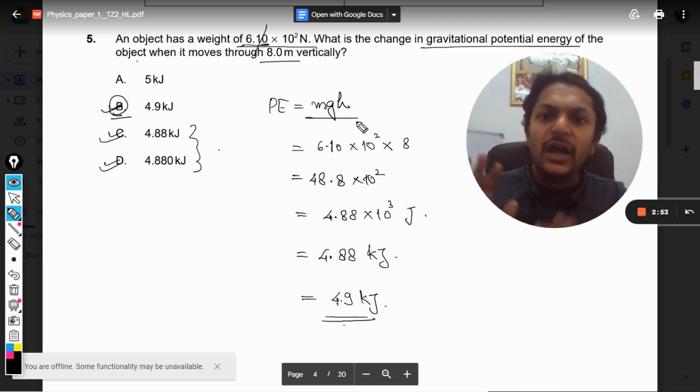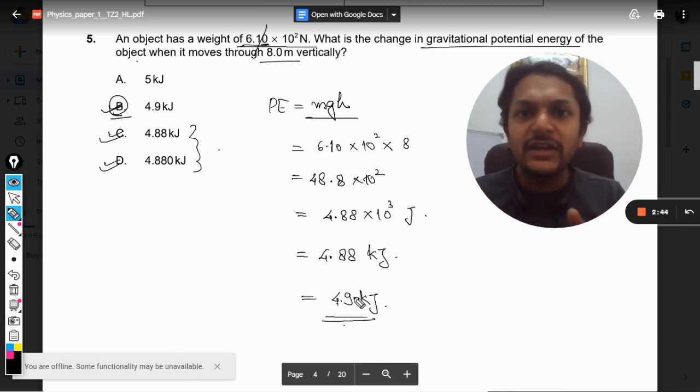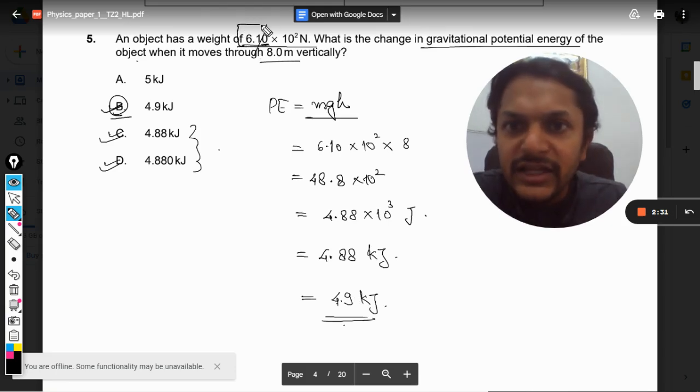See, this is the product. Whenever we are multiplying two physical quantities, the physical quantity having more number of significant figures is taken, and the answer is given in those many significant figures. But if it was addition or subtraction, we would be choosing the minimum significant figures. For example, here there are two significant figures in terms of weight, but when you talk about the length or the height, there is only one significant figure here. So we have chosen two.